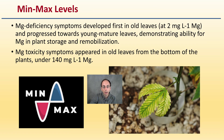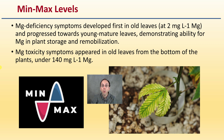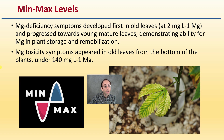Looking at minimum and maximum levels: magnesium deficiency symptoms developed first in older leaves at two milligrams per liter and progressed towards young, mature leaves, demonstrating the ability for magnesium in plant storage and remobilization — it can move. Magnesium toxicity symptoms appear in older leaves from the bottom of the plants under 140 milligrams per liter of magnesium.